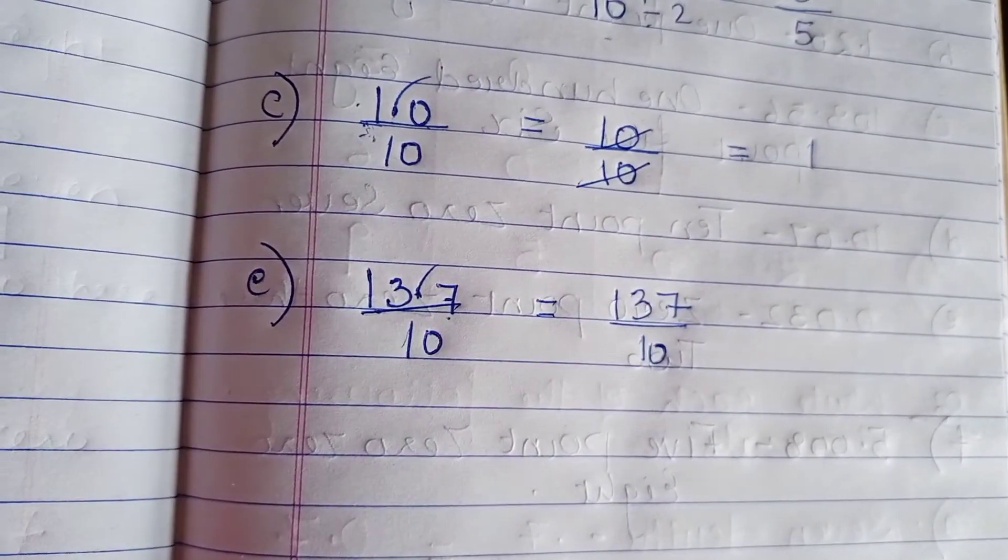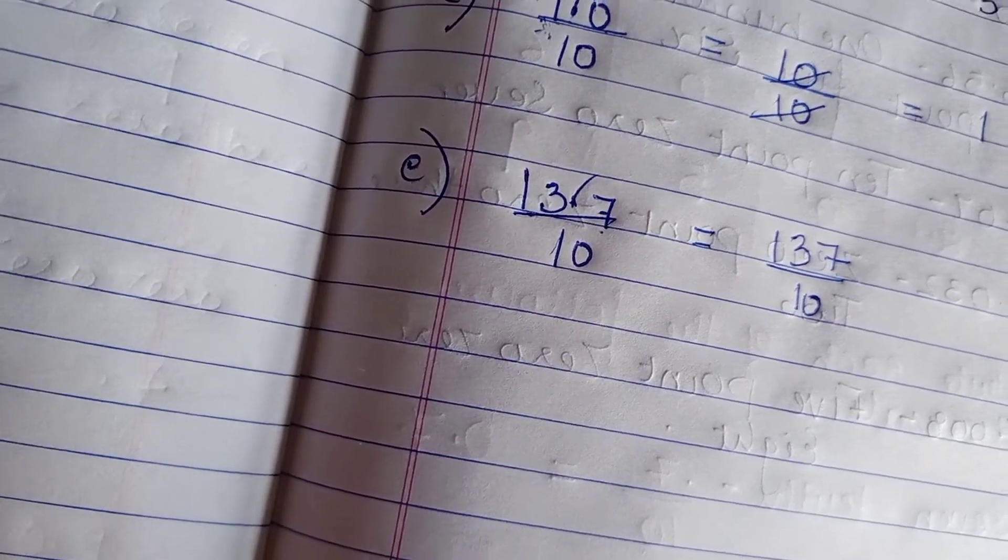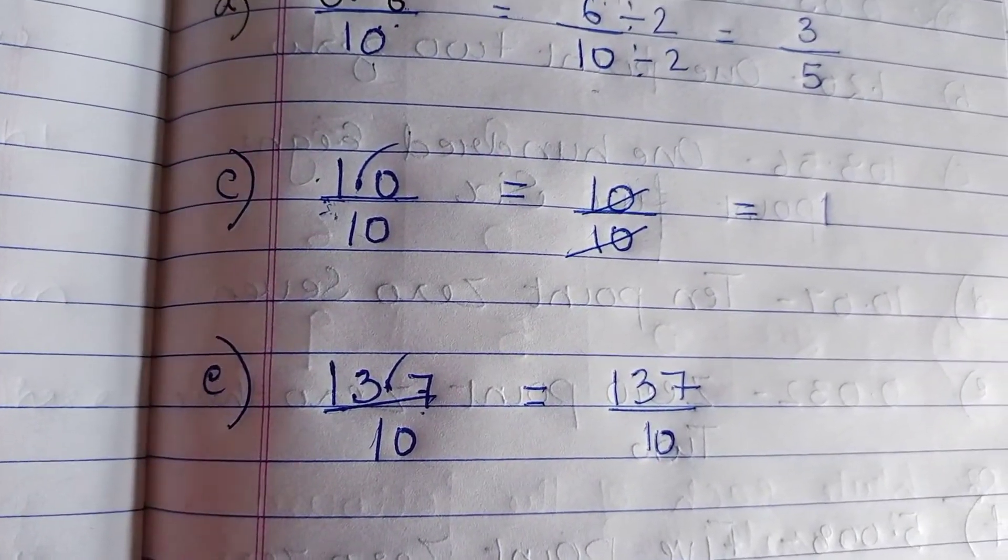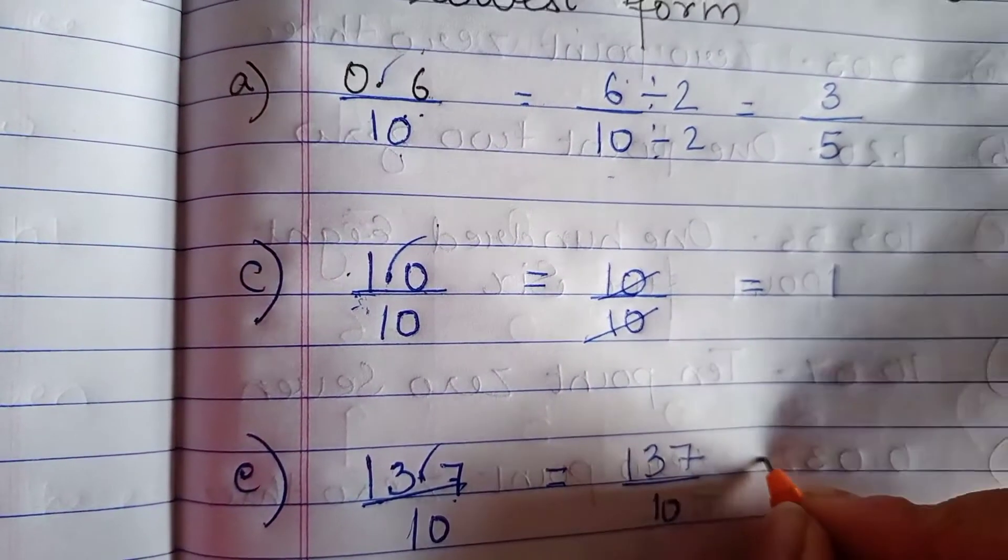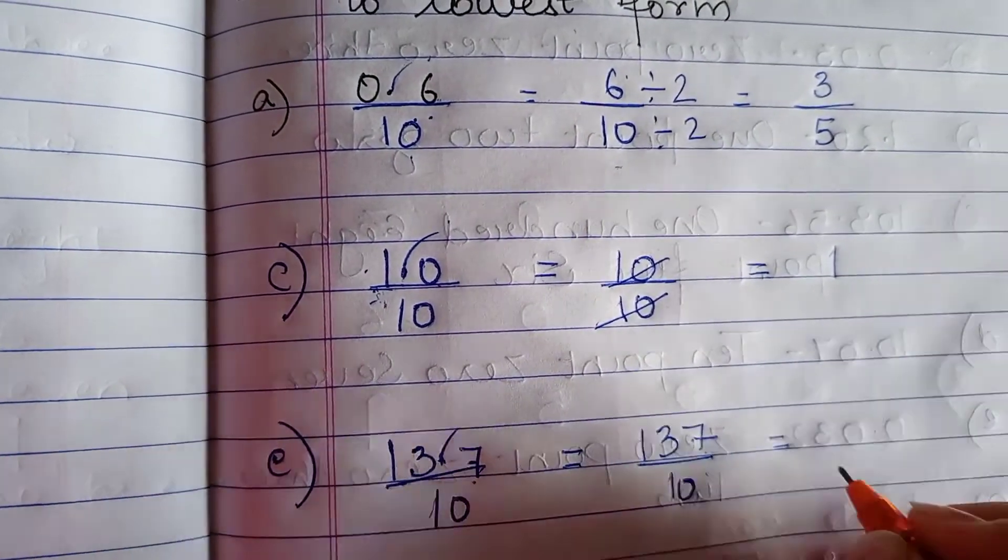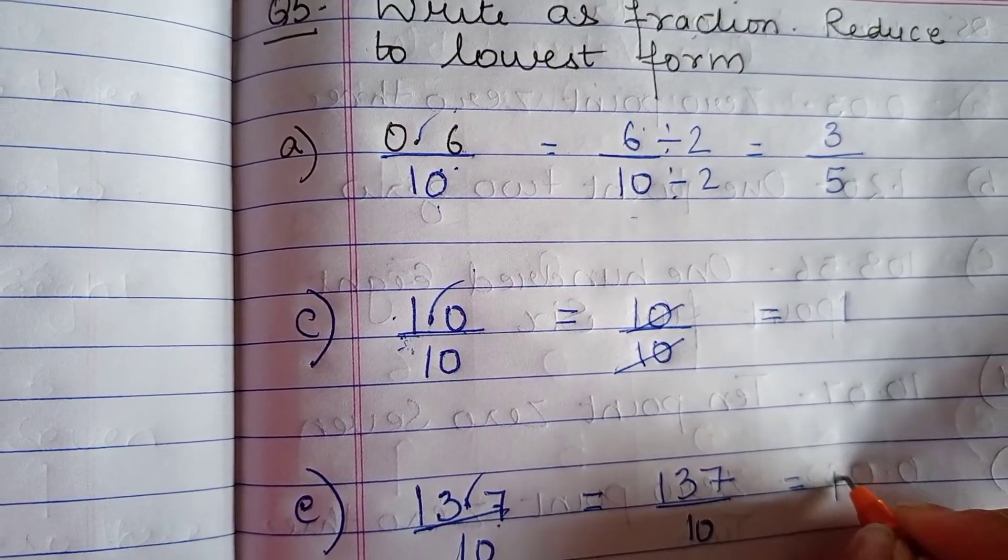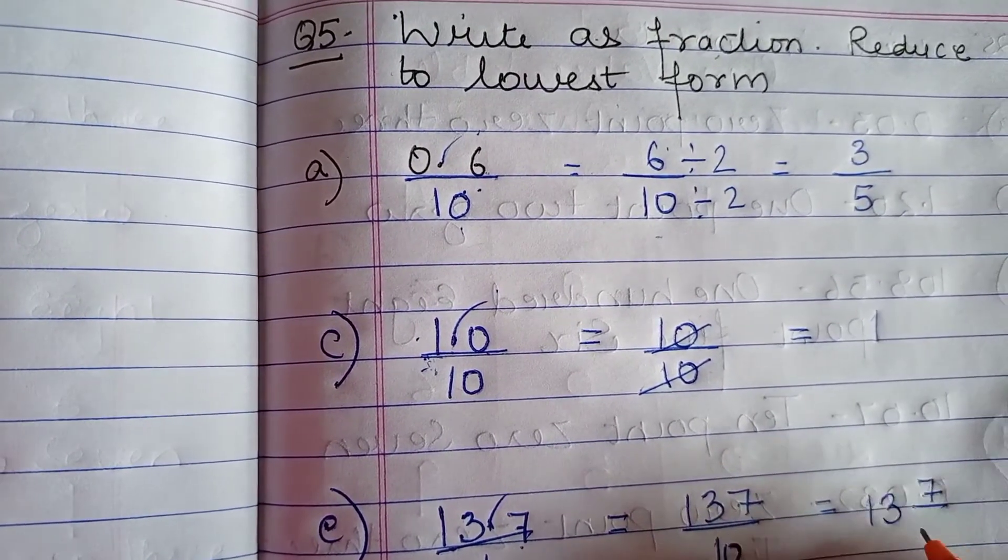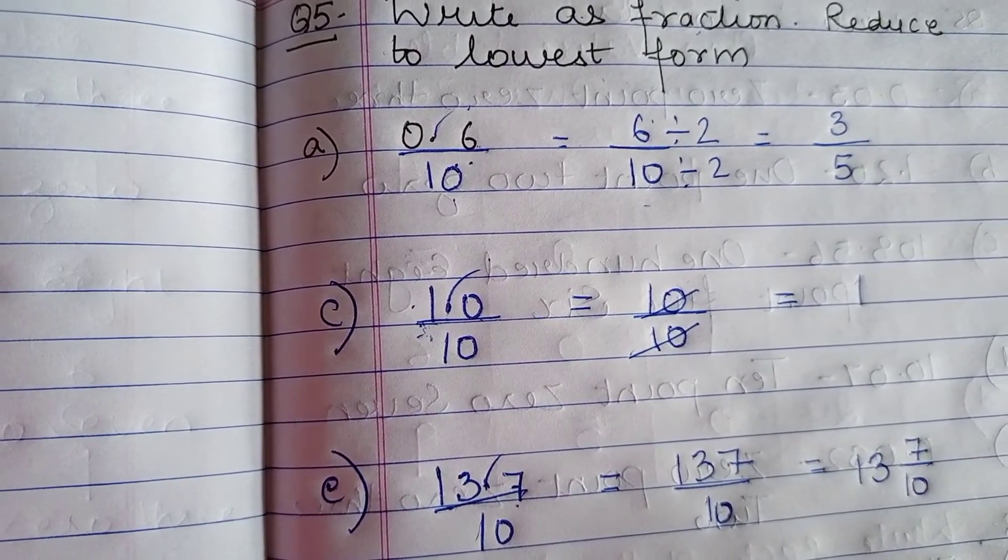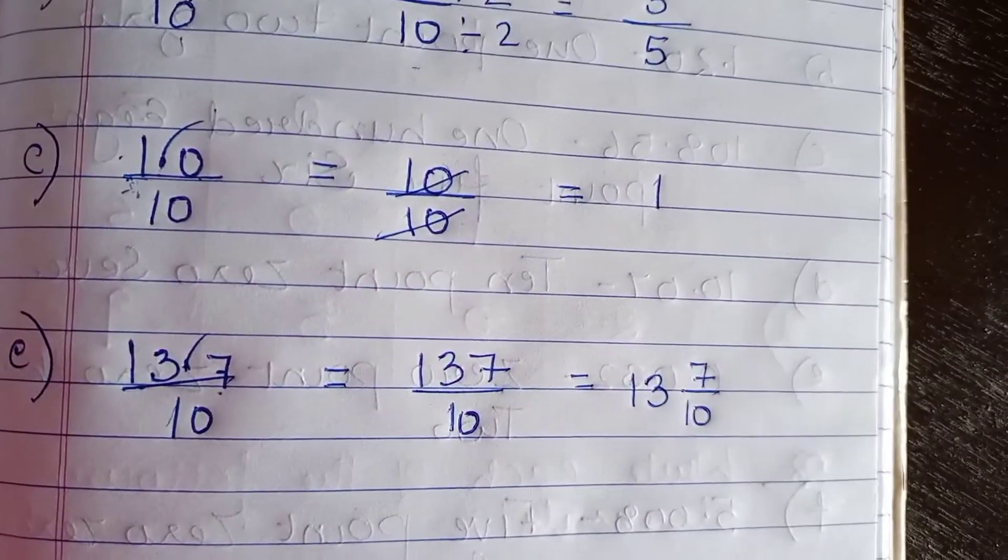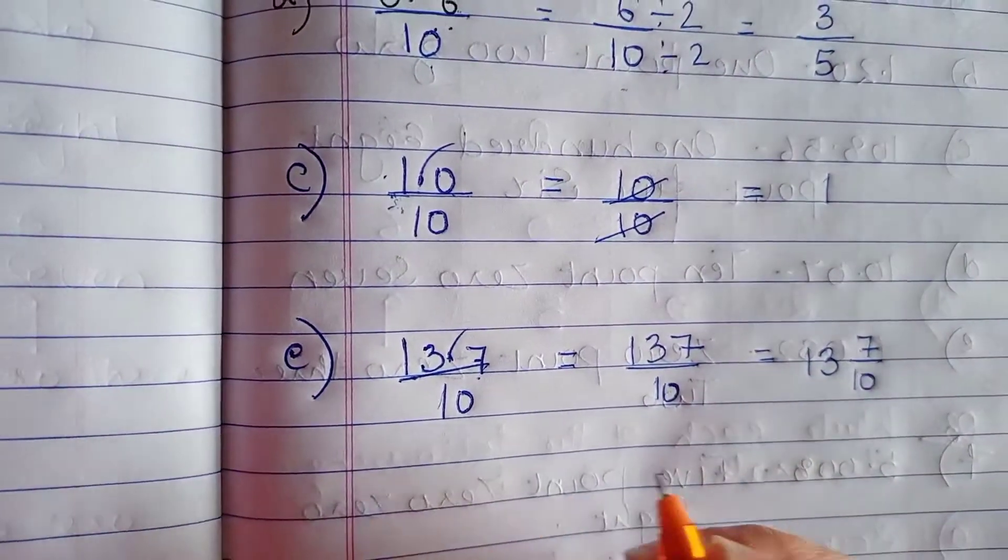Now if you can see these two numbers they are not divisible. They don't come in any table. So what you are going to do? You just have to convert it into mixed fraction. So if you convert it to mixed fraction, you will get the answer as 13 whole 7 upon 10. This was your E part.